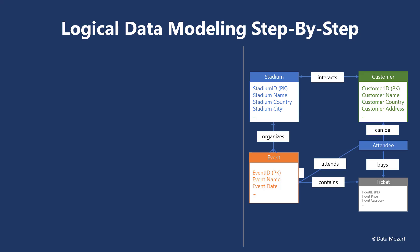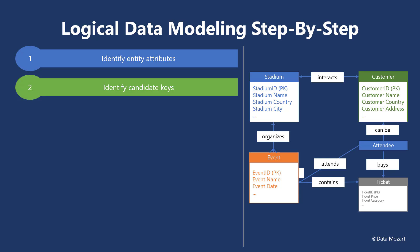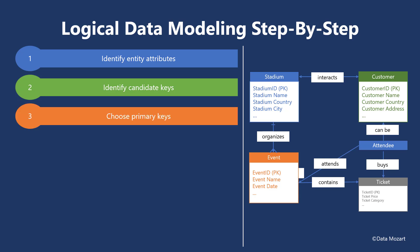There are several steps to be performed to ensure that the conceptual data model successfully evolves into a logical data model. First, identify entity attributes. Second, identify candidate keys — meaning find out which attribute or set of attributes uniquely identifies a specific entity. Third, choose primary keys: based on the findings from the previous step, set the primary key of the entity.